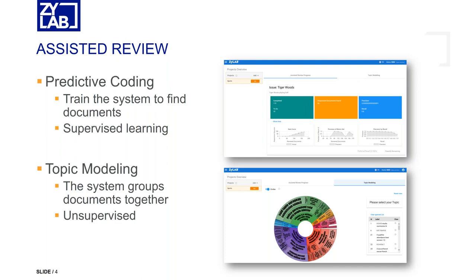We actually have two options in our assisted review. The first is predictive coding, where we train the system to find documents — this is also called supervised learning, because we feed the system with samples of proper documents and the machine teaches itself to find other related documents. Next to this we have topic modeling, where the computer groups documents together automatically. This is unsupervised, so the computer decides for itself what documents belong together.